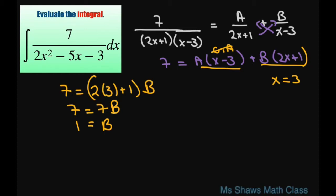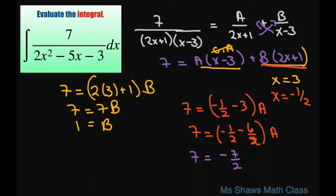Now for the A, let's eliminate the B. So we're going to let x equal negative 1 half. This is going to give me 7 equals negative 1 half minus 3 times A. This is going to give me 7 equals negative 1 half minus 6 halves times A. This should be negative 2. This gives me 7 equals negative 7 halves times A.